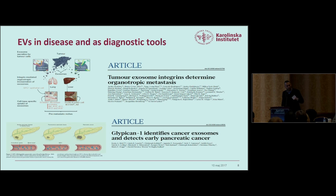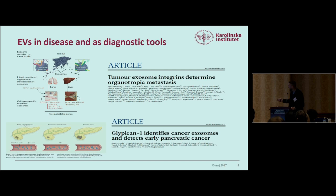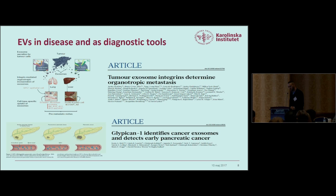I'll stop on RNA here as Joshua will speak about therapeutic RNA delivery. EVs are also interesting because they participate in disease. Work from David Lydon's lab showed that EVs promote tumor growth by establishing a pre-metastatic niche, and his most recent paper showed that integrin combinations on EVs determine organotropic metastases. Ragou Calouri's lab identified glipican-1 in pancreatic cancer cells as a good marker for tumor progression, using EVs as a diagnostic tool.